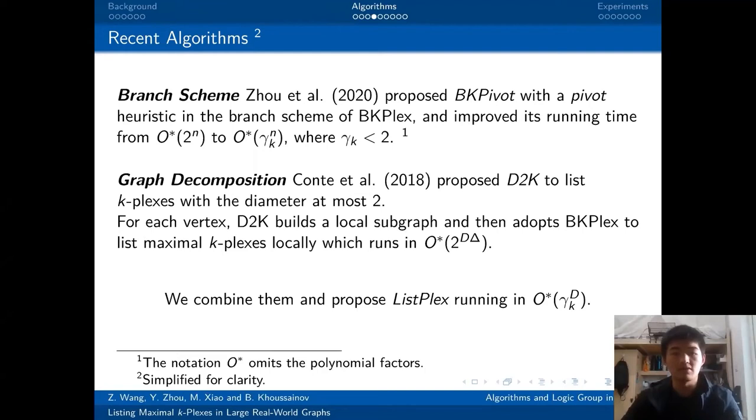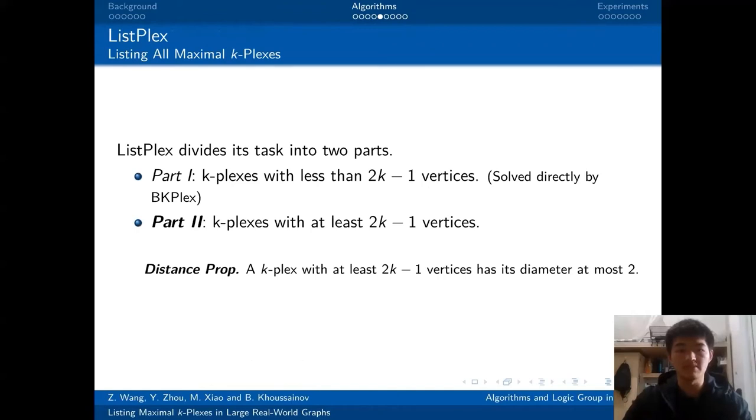So what we will do is just combine them and propose our algorithm, ListPlex, which runs in O*(gamma^d). Our algorithm, ListPlex divides the task into two parts. The first part is listing k-plexes with less than 2k-1 vertices. Because this part is not of much interest, we solve it directly by BK-Plex. The second part is listing k-plexes with at least 2k-1 vertices. This part is very interesting. Because according to the distance property, the diameter of this kind of k-plexes is at most 2.